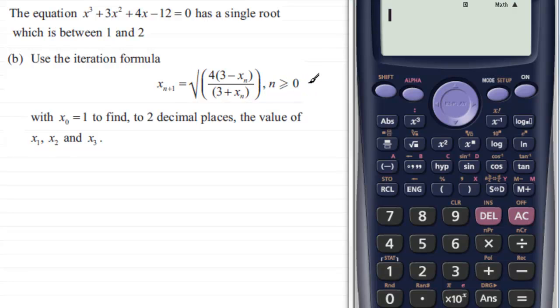where n ≥ 0. We have a starting value x_0 = 1, and what we've got to do is find to two decimal places the values of x_1, x_2, and x_3.